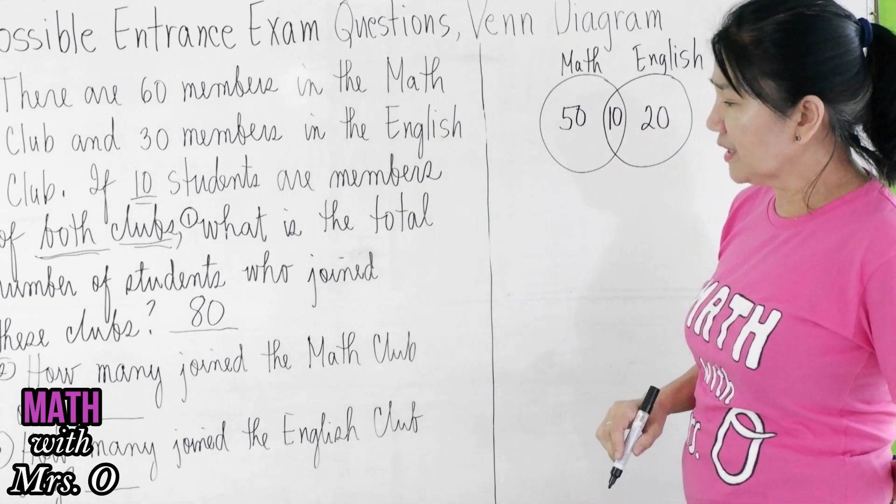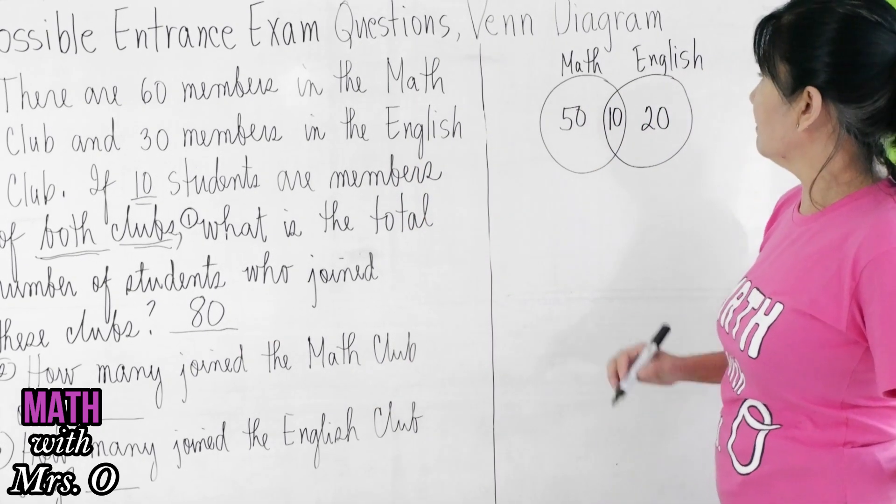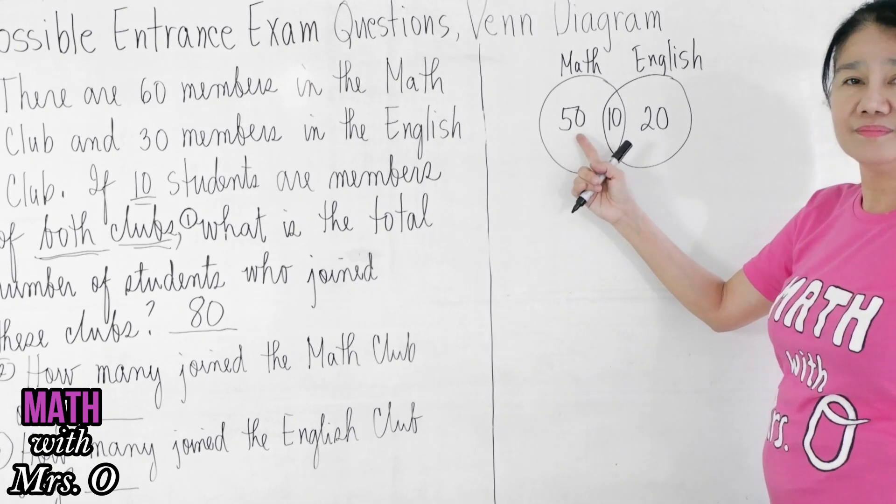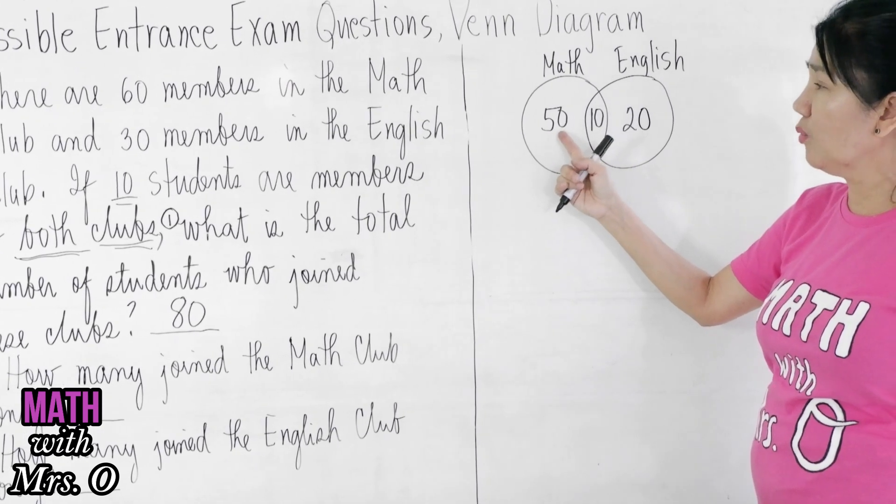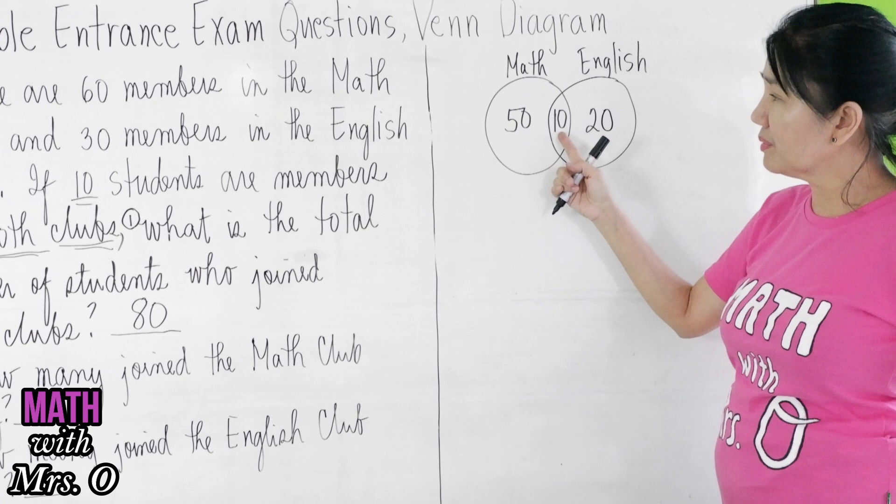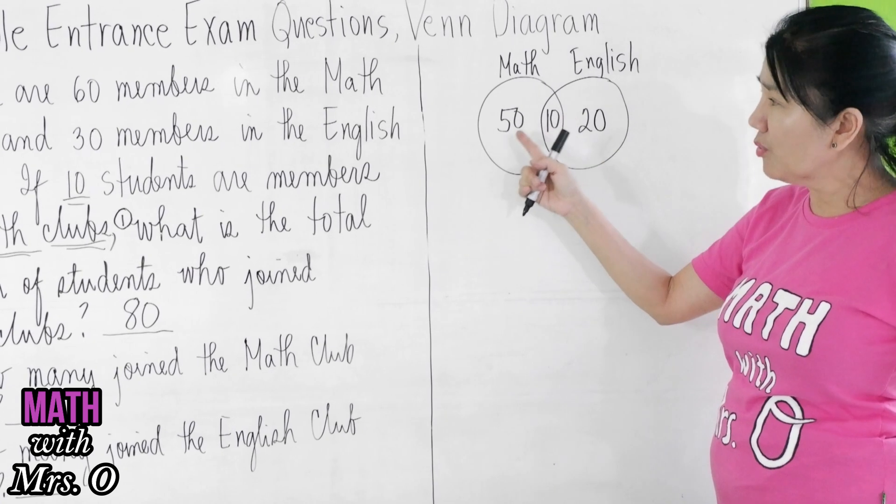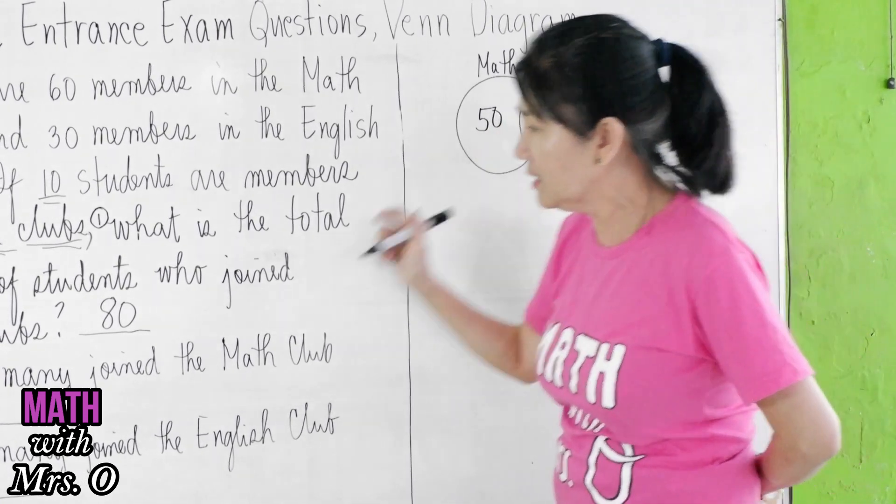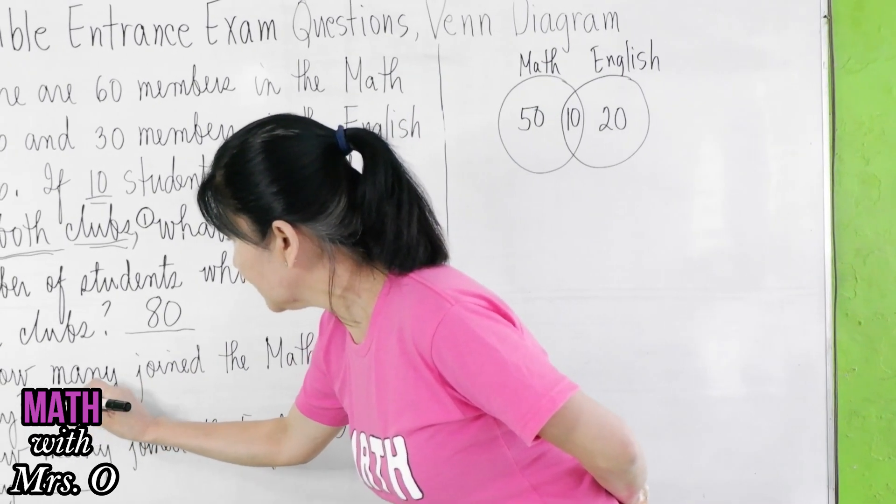How many join the math club only? Math club only, you have 50. Why? Because remember, 10 join both clubs, so if it is the math club only, you have 50.